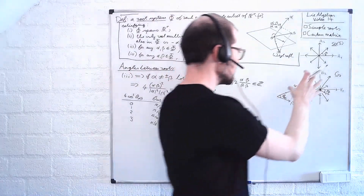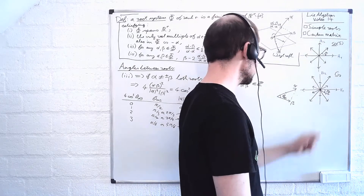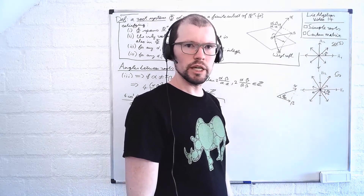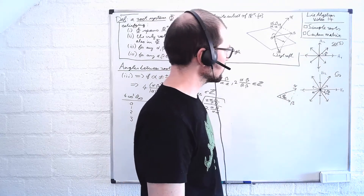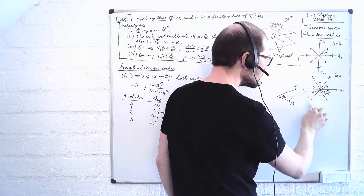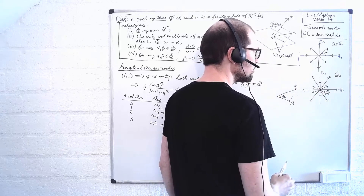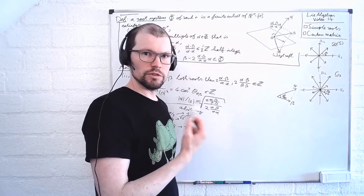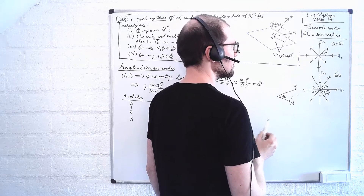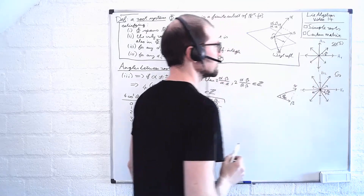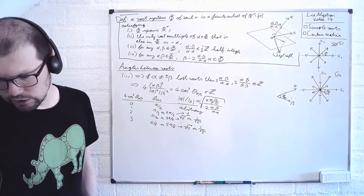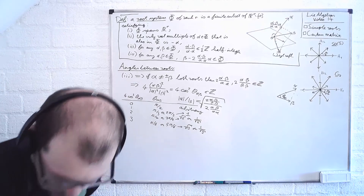We know that the angles have to be among a very limited set. But there are quite a number of vectors one may have to specify. What I'm going to show now is that really among all these — in this case 12 roots for G2 — I only have to specify two of them to fix the picture. In general, I only need to specify a number of root vectors equal to the rank of the algebra. Let's see why this is the case, and for this I need two definitions.